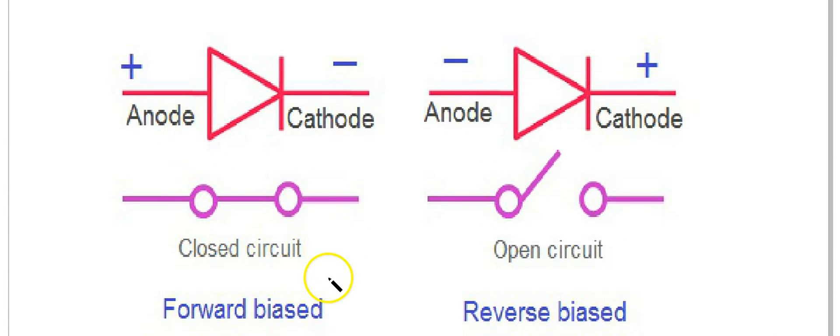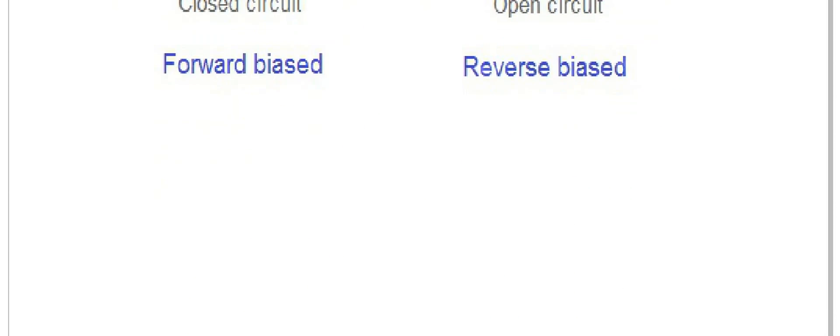So: anode-cathode, closed switch when forward biased; reverse biased, no current flows.